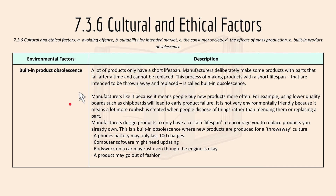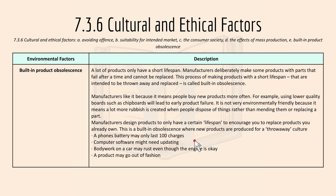Lastly, we have built-in obsolescence. A lot of products only have a short lifespan, and manufacturers deliberately make some products with parts that fail after a time and cannot be replaced. This process of making products with a short lifespan intended to be thrown away and replaced is called built-in obsolescence. Manufacturers design products to have a certain lifespan to encourage consumers to replace products they already own. Examples include a phone battery that only lasts a certain number of charges, computer software that needs updating, car bodywork that rusts even though the engine is fine, and products that go out of fashion.